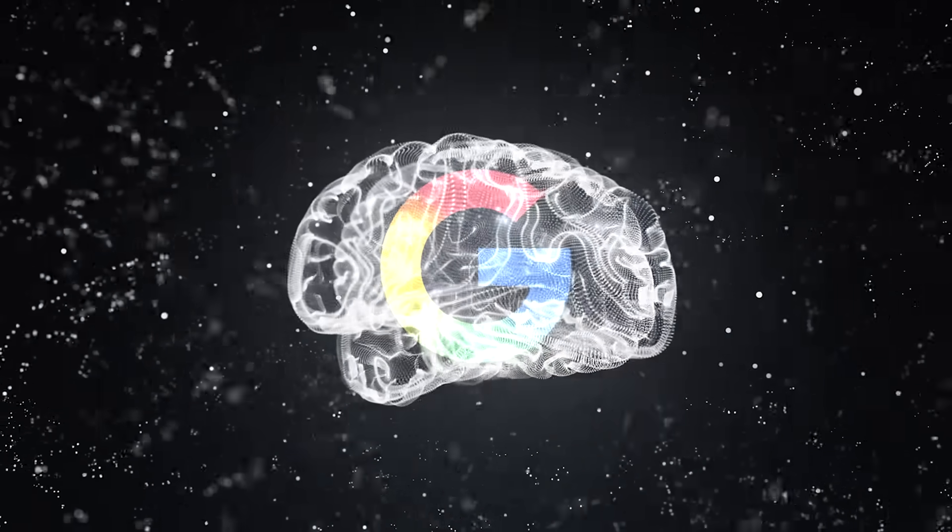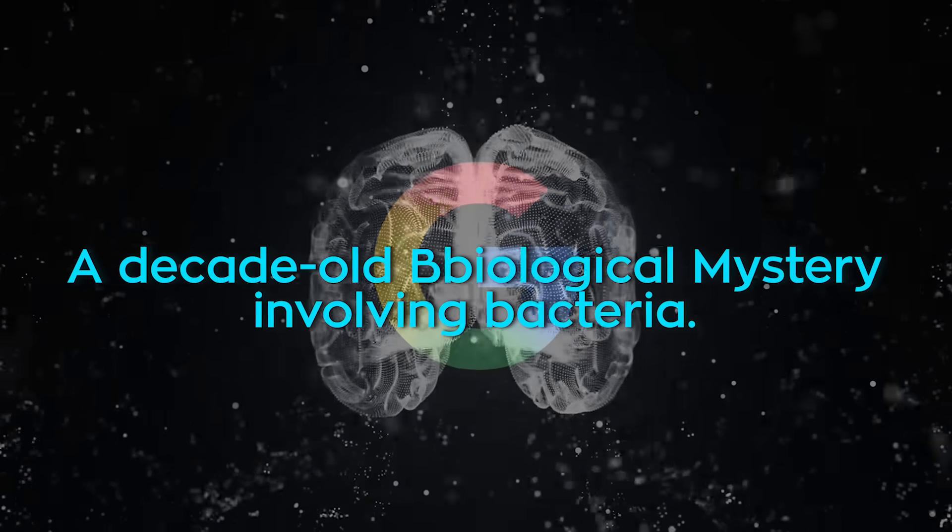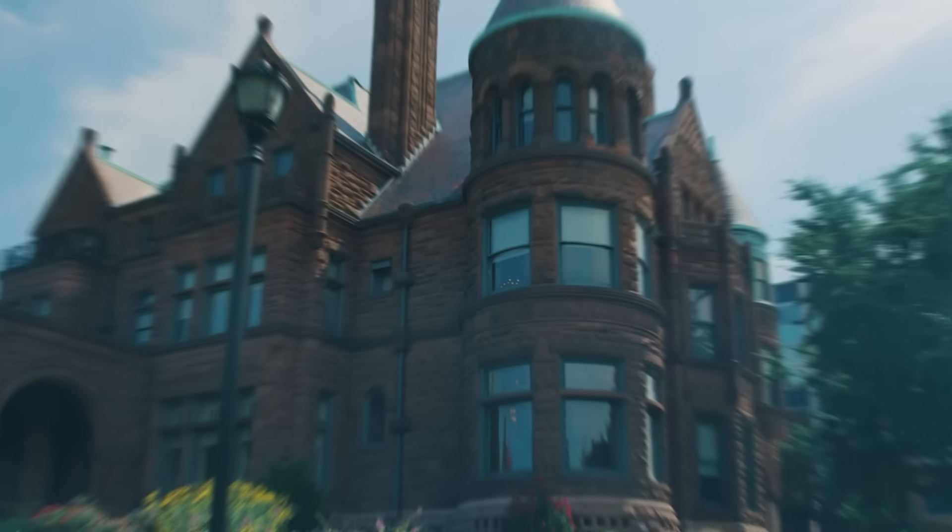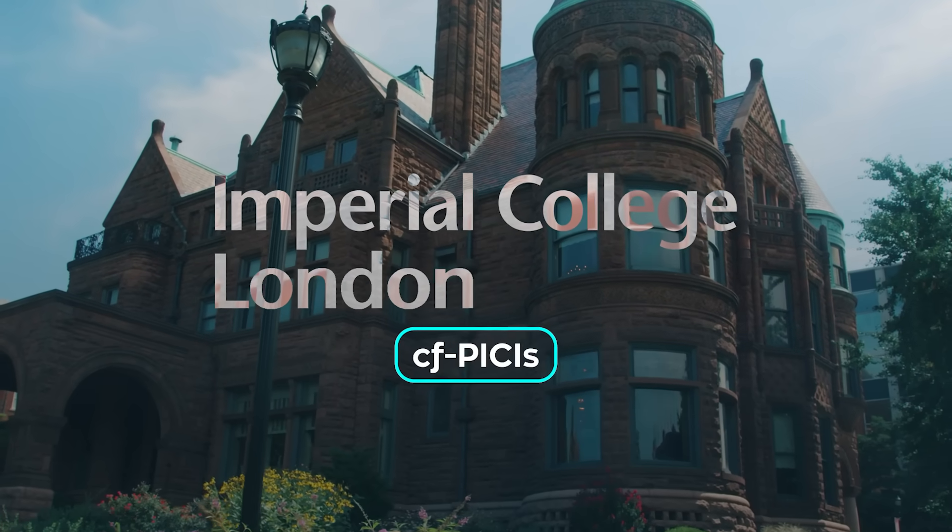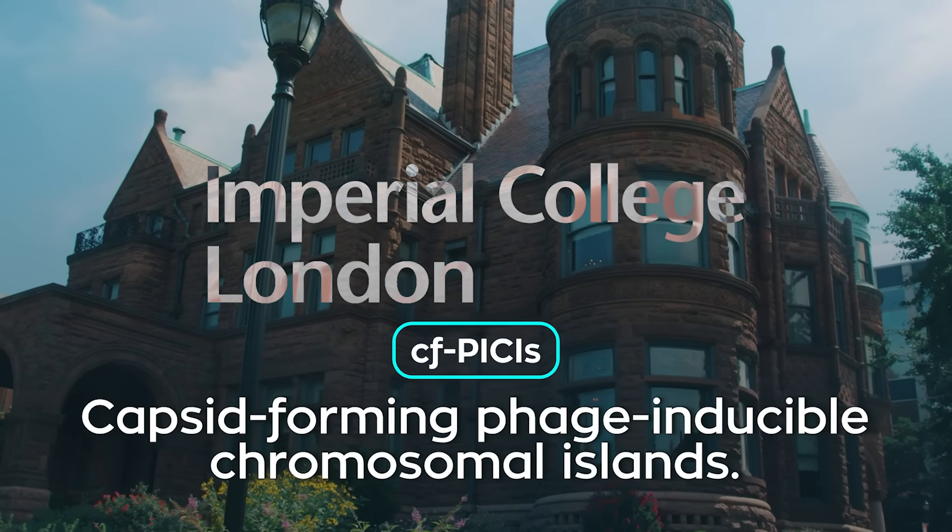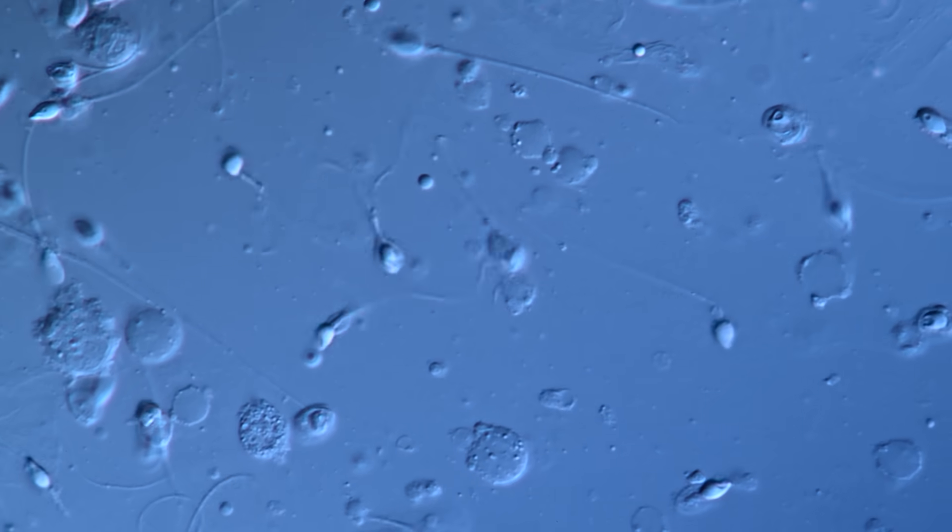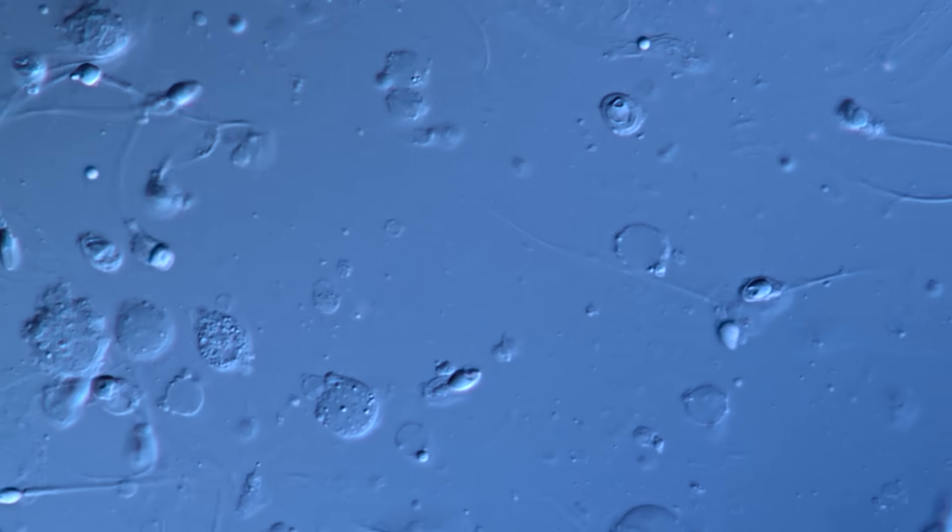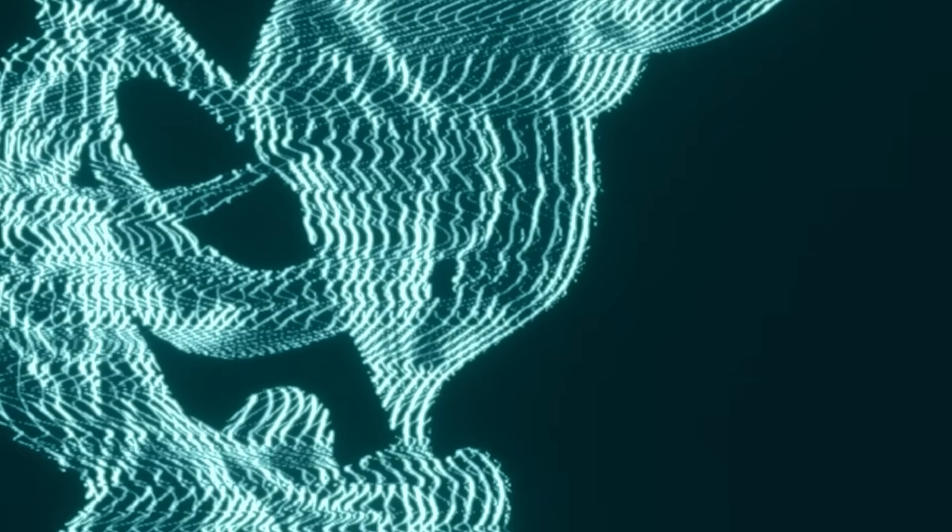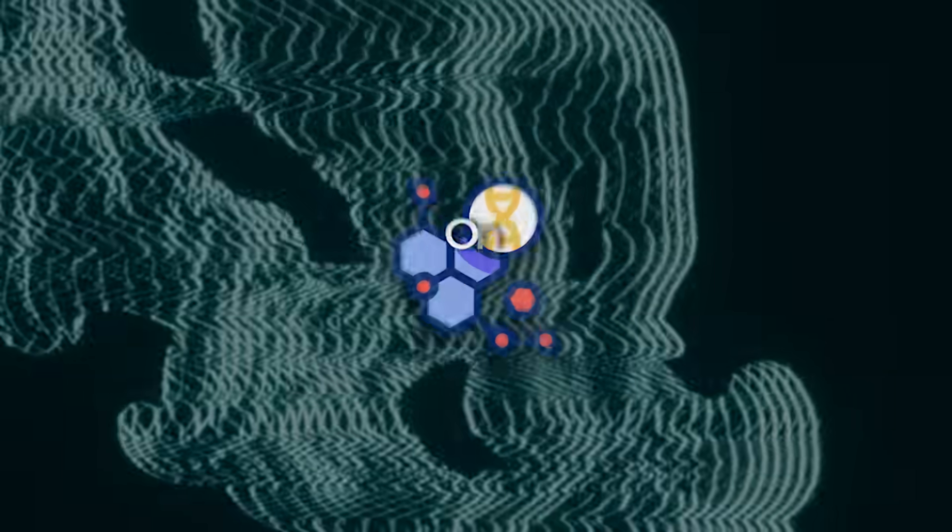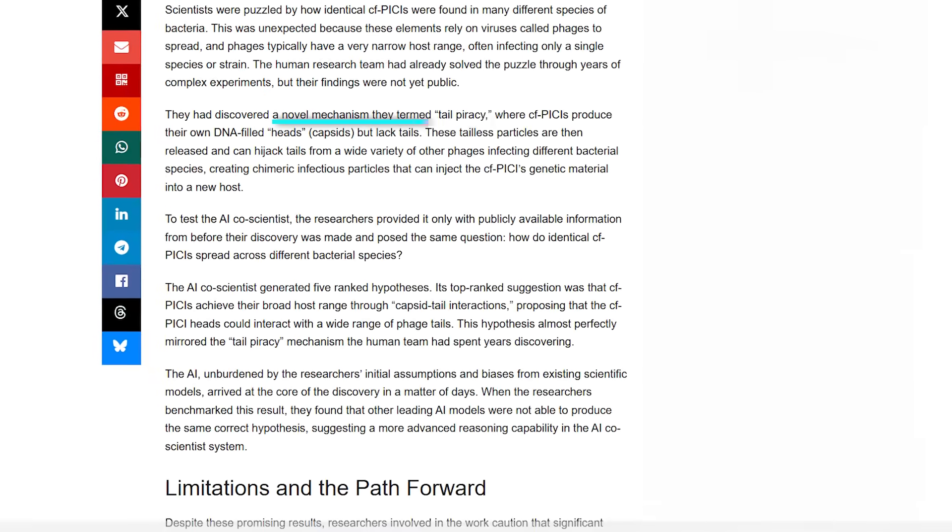In a second study published in Cell, the same AI system tackled a totally different challenge, a decade-old biological mystery involving bacteria. Researchers at Imperial College London had spent more than 10 years studying something called CFPICIs. Capsid forming phage-inducible chromosomal islands. Basically, tiny genetic hitchhikers that hijack viruses or phages to move between bacteria. The problem? These things kept showing up in totally different species, even though phages are picky little divas that usually infect only one type of host. The human team eventually discovered the secret mechanism. They called it tail piracy.